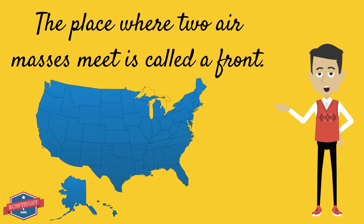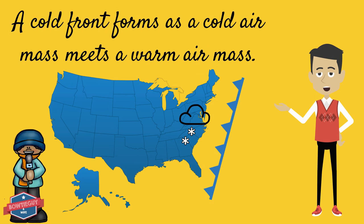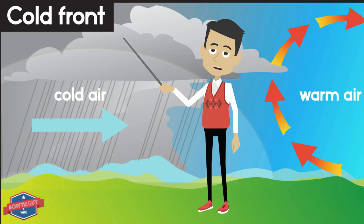The place where two air masses meet is called a front. A cold front forms as cold air meets a warm air mass. The cold air moves under the warm air, pushing it up. As the warm air rises, clouds form and precipitation occurs. Thunderstorms often happen along a cold front.